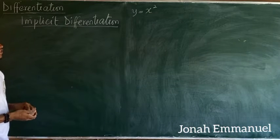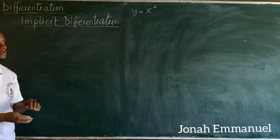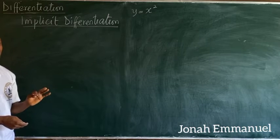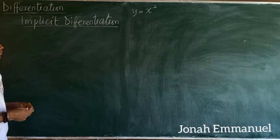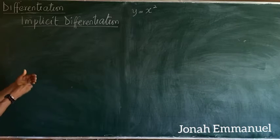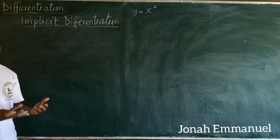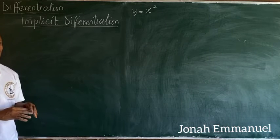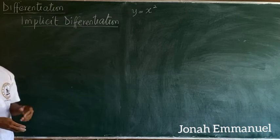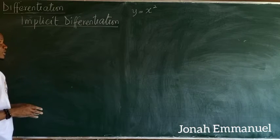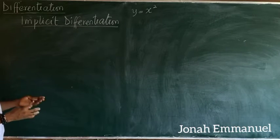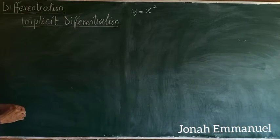The technique is: whenever I differentiate X it remains the same, but whenever I differentiate a Y I add dy/dx — that is, the Y over the X. That's the concept behind implicit differentiation. We'll take a simple example and see what we get.